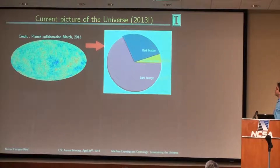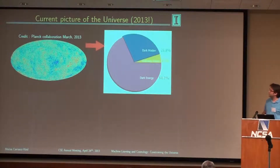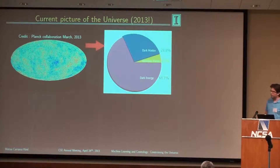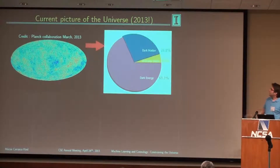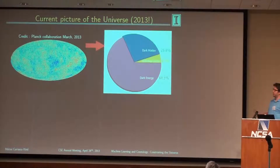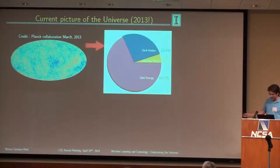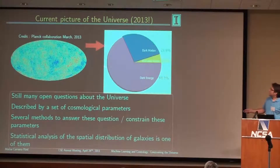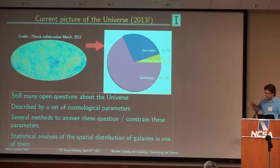Let me give you a little introduction of what is the current picture of the universe today. We got this recent image from the Planck Collaboration, which is a satellite to measure the cosmic microwave background. This is one of the most precise measurements of the components of the universe, and it was taken when the universe was 300,000 years old — very, very far in both distance and time.